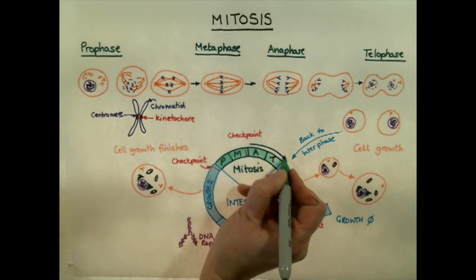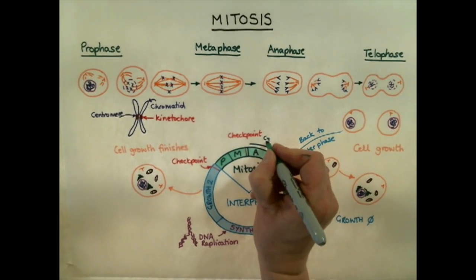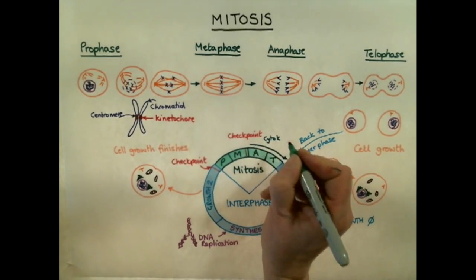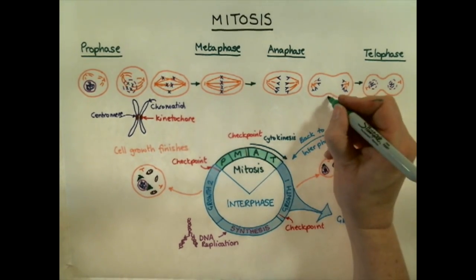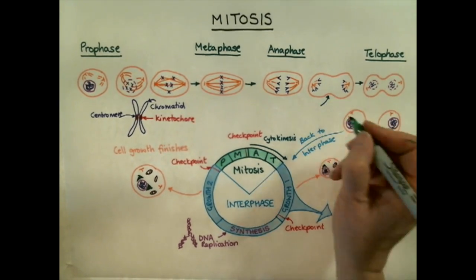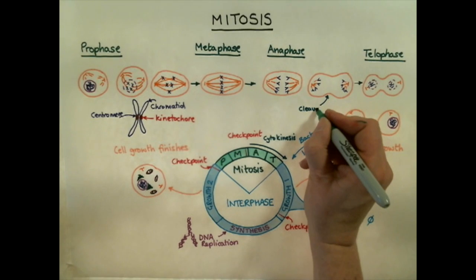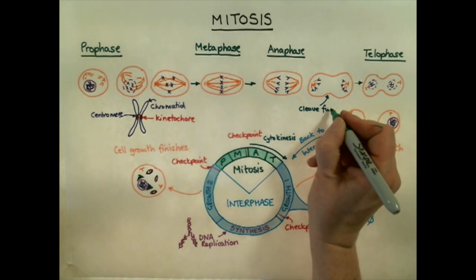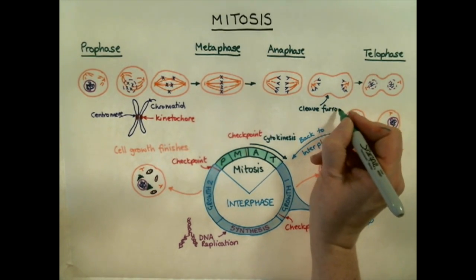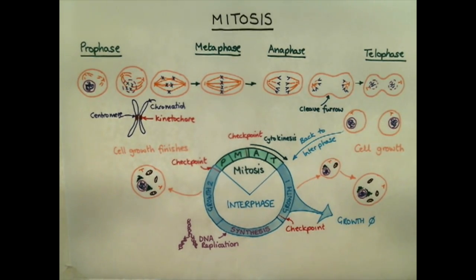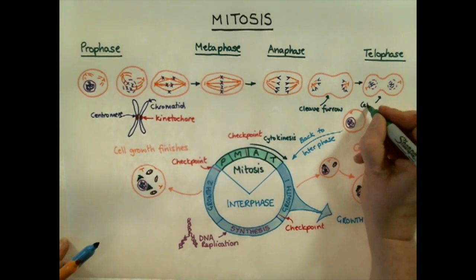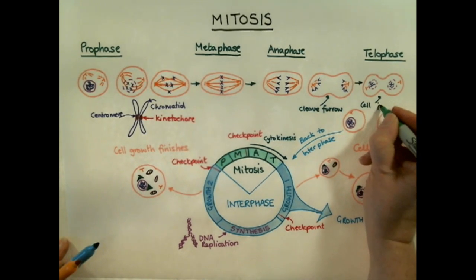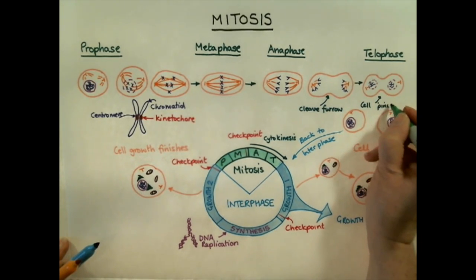Cytokinesis begins in late anaphase, when a cleavage furrow forms around the cell as an indentation of the cell membrane. Microfilaments just inside the plasma membrane form a contractile ring, which pulls the membrane inwards, finally pinching off the two cells. Thank you for watching this screencast, and I hope you will join me again for the next screencast on meiosis.